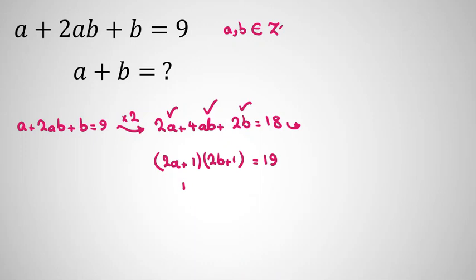Now 19 is prime. The only possible cases are 1 and 19, or 19 and 1 if we switch them. Because we want to find a plus b, it's not important to consider 1, 19 or 19, 1 separately. Negative 1, negative 19. Again, it's not important to switch.